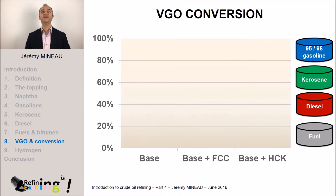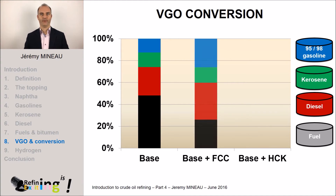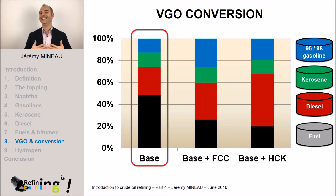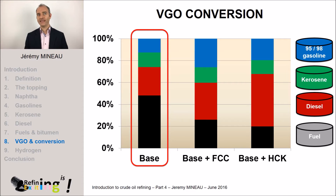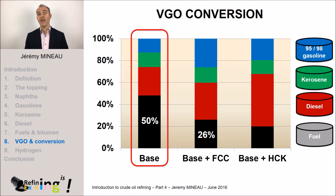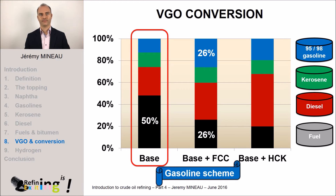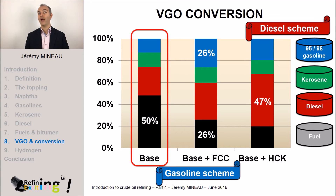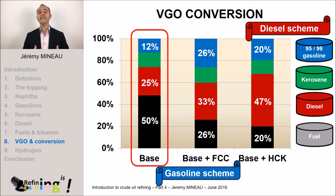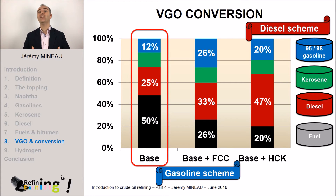Here are displayed the final product repartitions according to the refinery scheme. The base case corresponds to a refinery without any conversion unit — in this case, we produce approximately 50% of fuel oil. When we consider adding a FCC, the fuel oil proportion is reduced down to 30%, but this scheme tends to increase the proportion of gasoline. In Europe, especially in France, we need to produce diesel fuel. The hydrocracking allows us to produce 50% of diesel fuel from crude oil — that's why this option is the preferred one in Europe. This is how the refiner manages to increase the proportion of finished products from crude oil by investing in conversion units.